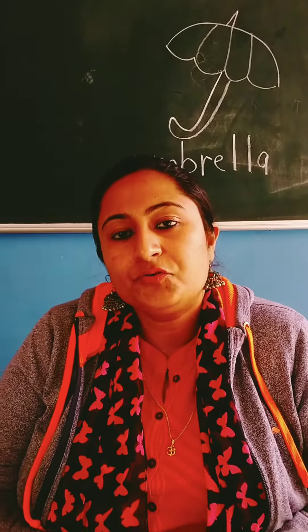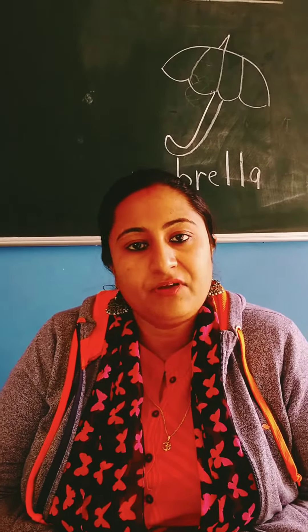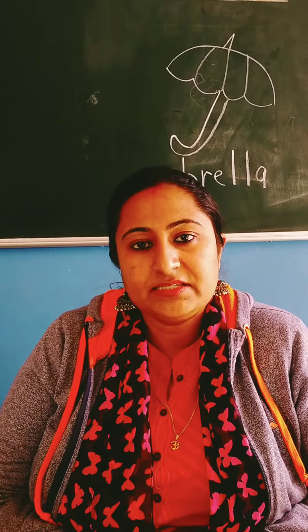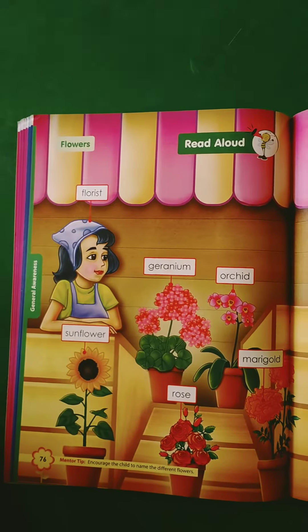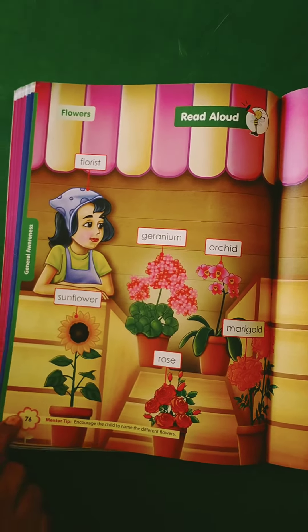Good morning children. Today we are going to do the recap of the names of flowers, fruits and vegetables. So take your book number 5 and open the page 76.